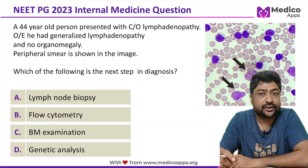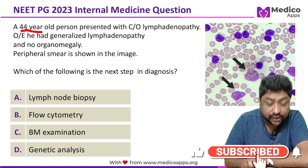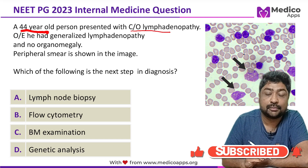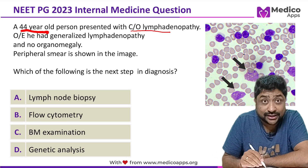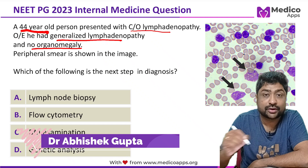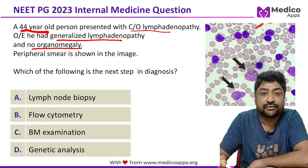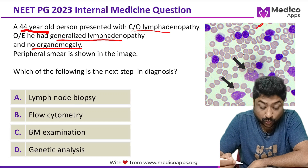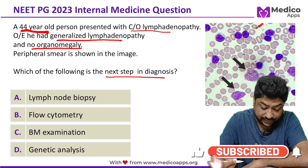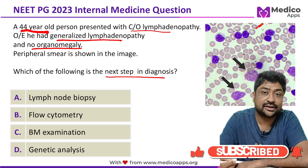This question appeared in NEET PG-2023. A 44-year-old person came with a history of lymphadenopathy. On examination he has generalized lymphadenopathy but there was no organomegaly. A peripheral smear was done. What is the next step in diagnosis? The options are: lymph node biopsy, flow cytometry, bone marrow examination, and genetic analysis.